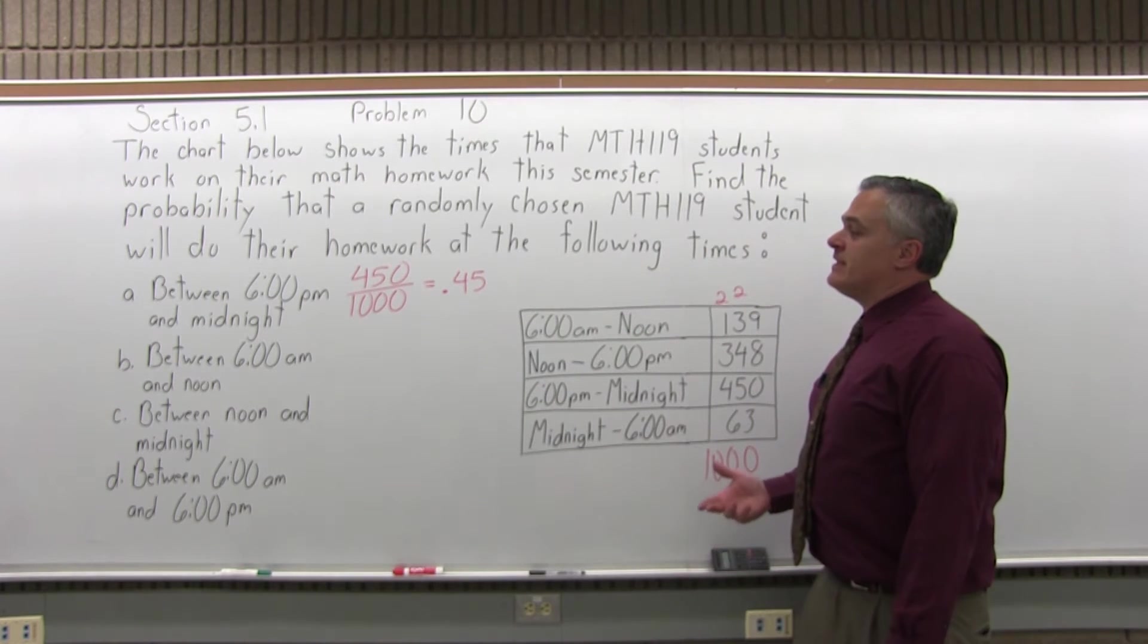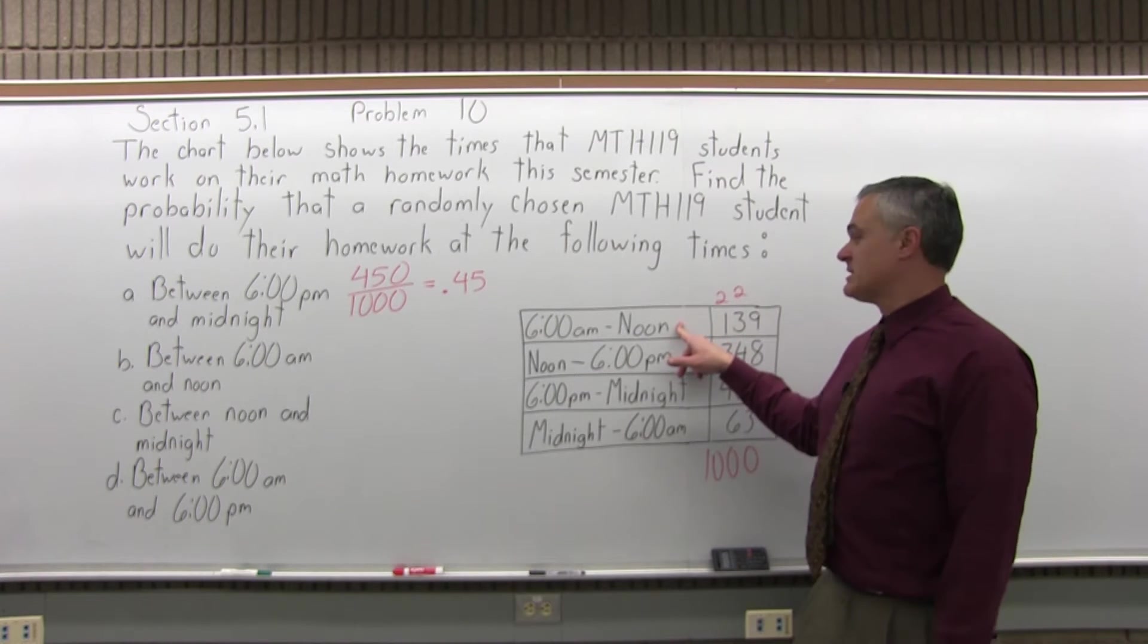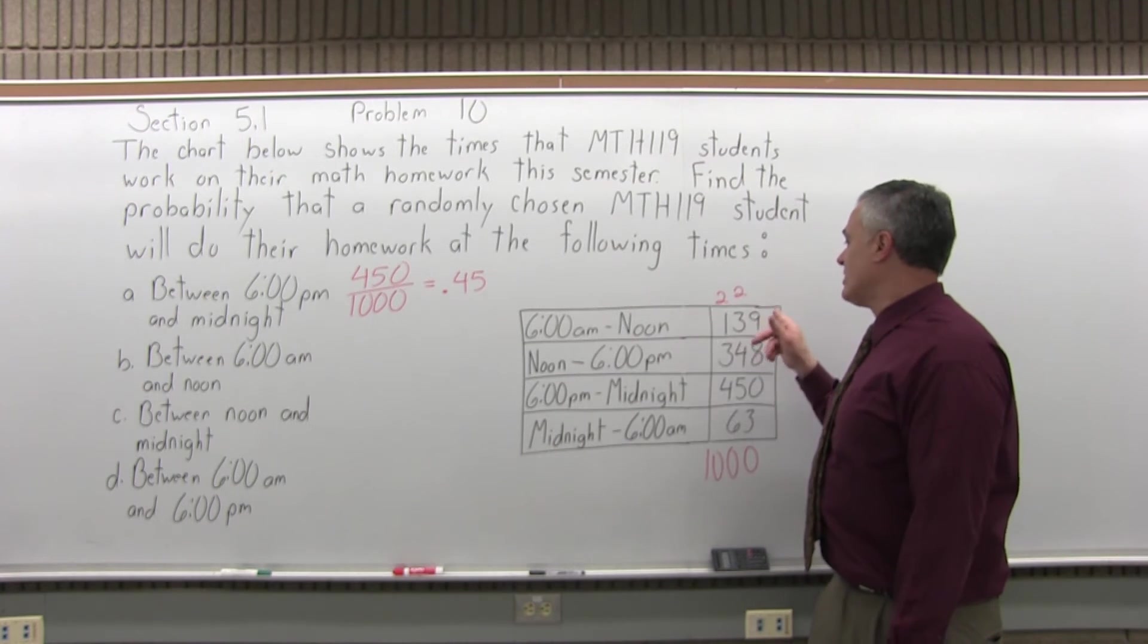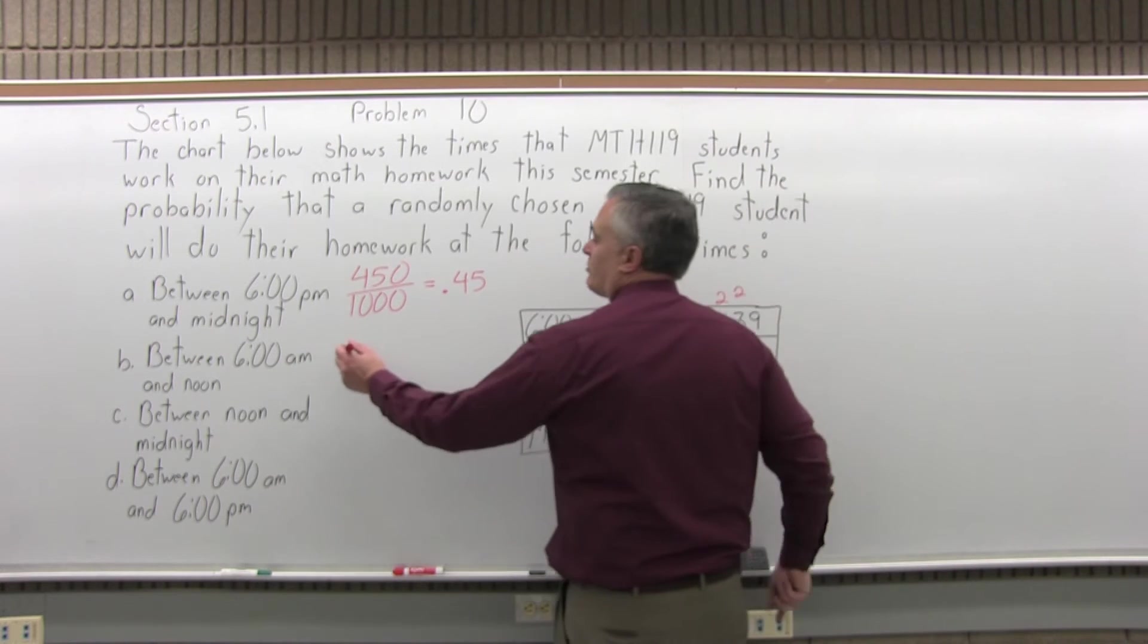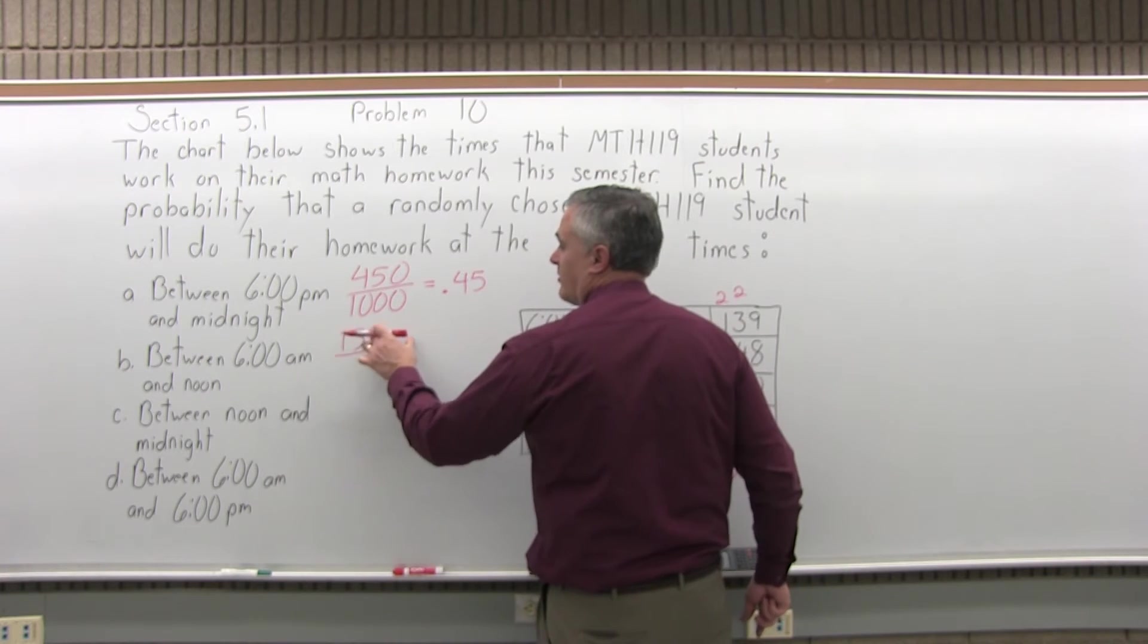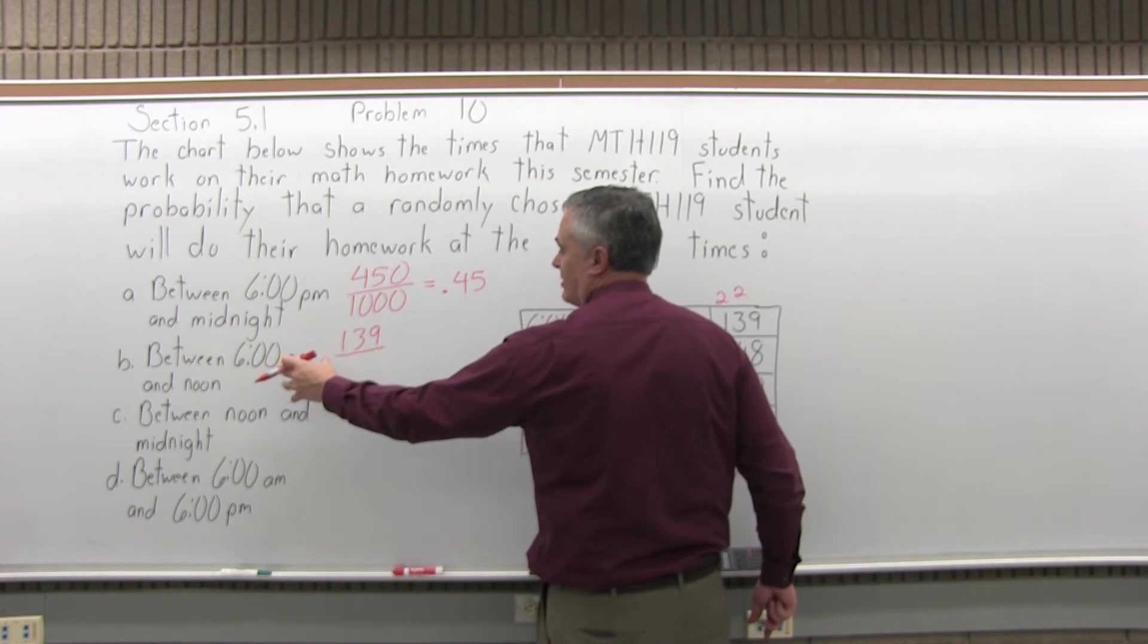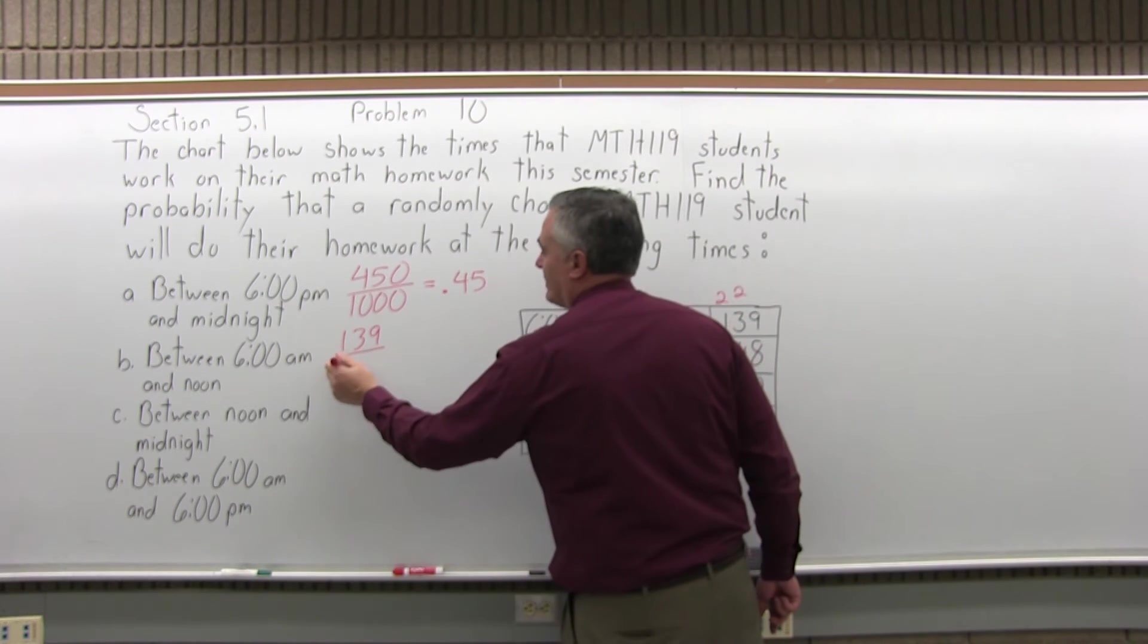So, the next interval between 6 a.m. and noon. There's a time interval from 6 a.m. to noon. In that interval, there were 139 students who tended to do their homework then. So the probability that a randomly selected Math 119 student does their homework in that interval between 6 a.m. and noon would be the 139 that did it then out of the 1,000 all together.